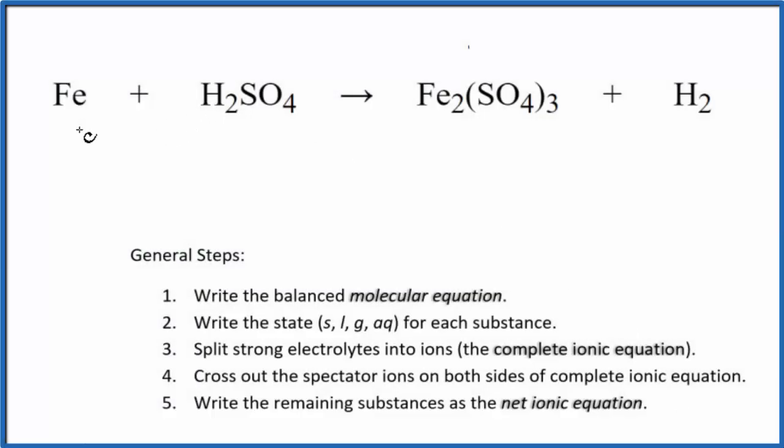In this video we'll write the balanced net ionic equation for Fe plus H2SO4, this is iron plus sulfuric acid. This reaction the way it's written is taking place in dilute sulfuric acid, so we have a more dilute form of the sulfuric acid and that's why we get the hydrogen here in our products.